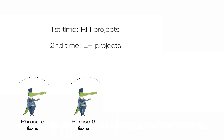I'm going to play just phrase five and phrase six — just a couple of bars. The first time you'll notice that my right hand projects, and then the second time it's my left hand. This is a lovely way that within this piece, A Little Fable, you can bring colour. Getting the pupil to imagine it with those woodwind instruments, rather than just your left hand playing more loudly and vice versa, is a really nice way to think about it.